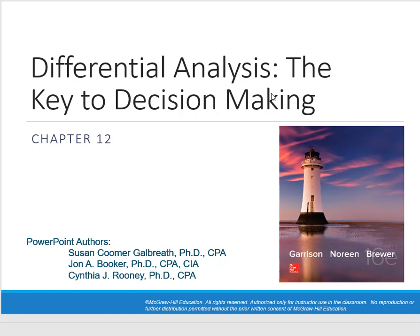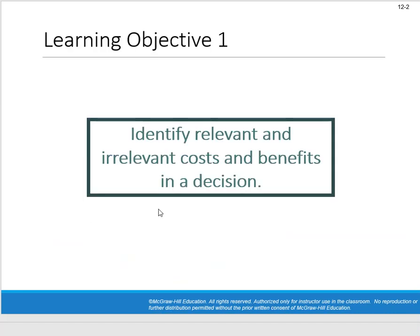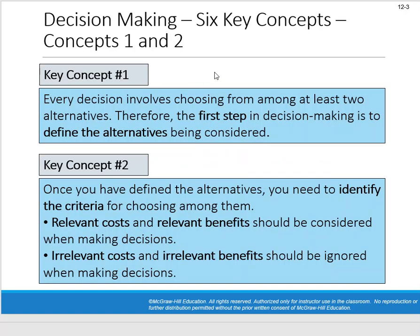Managerial accounting students, chapter 12. We only have three chapters to go — chapters 12, 13, and 15; we're skipping chapter 14 as it's not required. So we're on the home stretch. Today we'll get into chapter 12: differential analysis, the key to decision-making. We've talked about differential analysis and relevant and irrelevant costs before — some of these concepts go all the way back to chapter one. The key idea is that only things that differ between two alternatives matter. Six concepts to get us started.